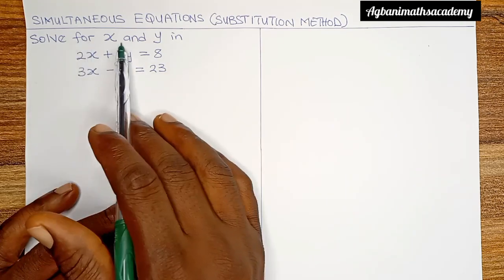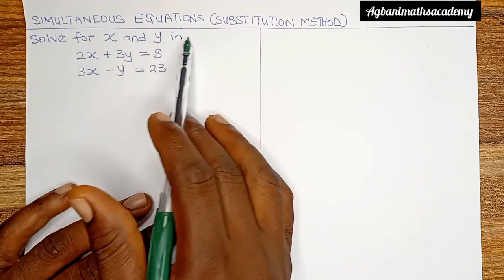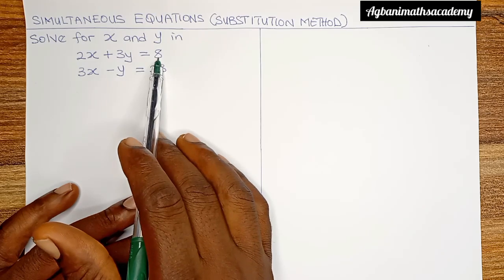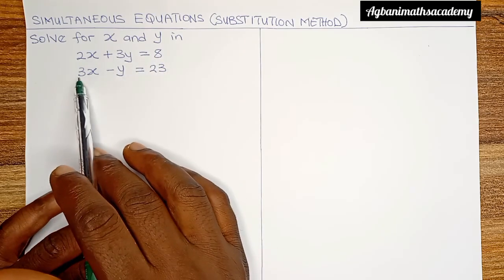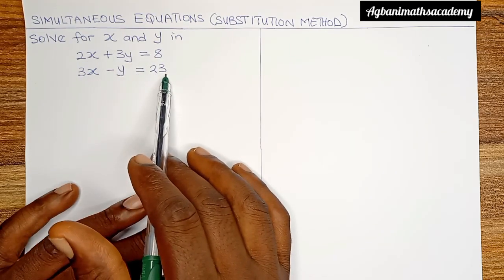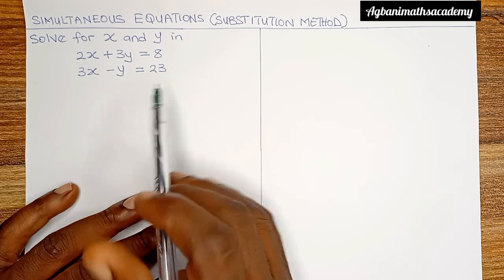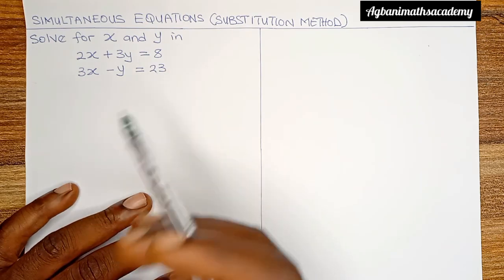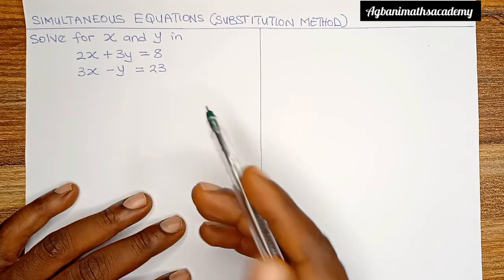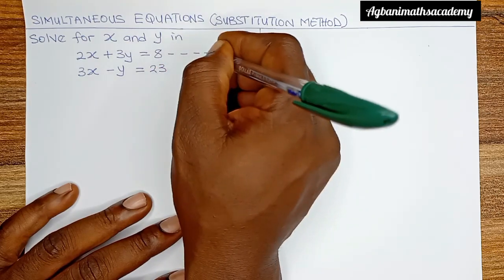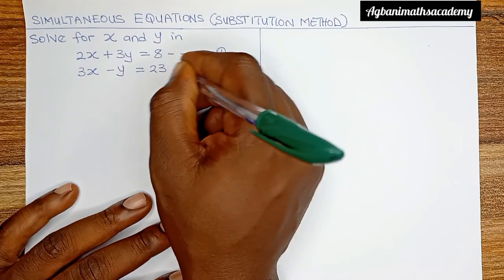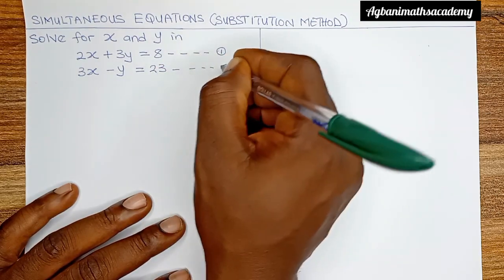In this problem, we are expected to solve for x and y in: 2x plus 3y is equal to 8, and 3x minus y is equal to 27. So in order to solve this, we are going to label each of the equations. Let's call this equation 1 and let's call this equation 2.